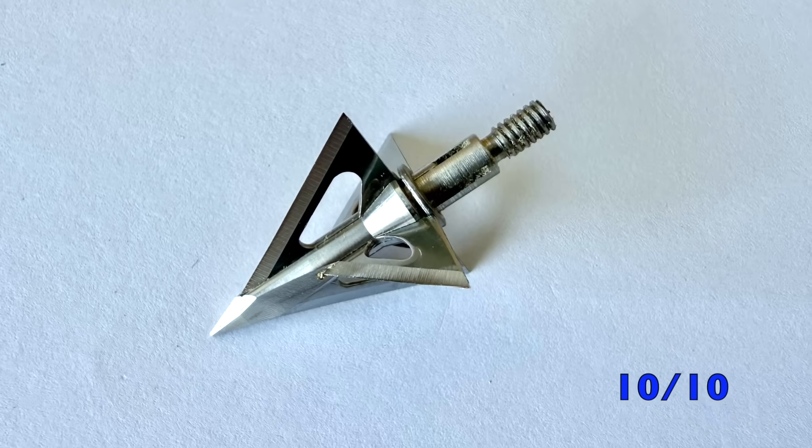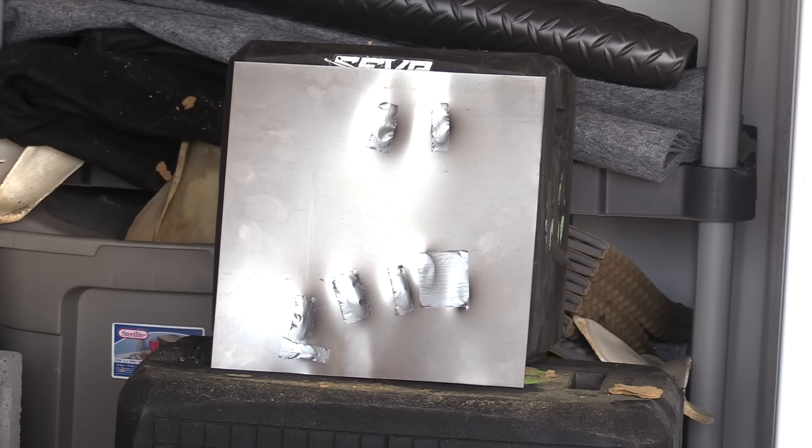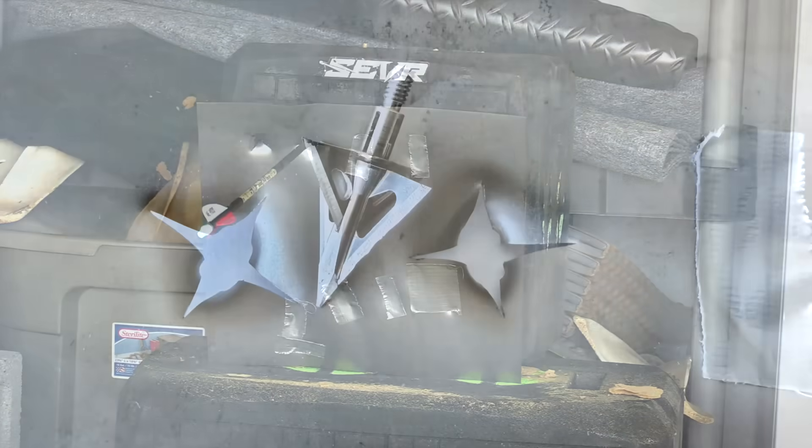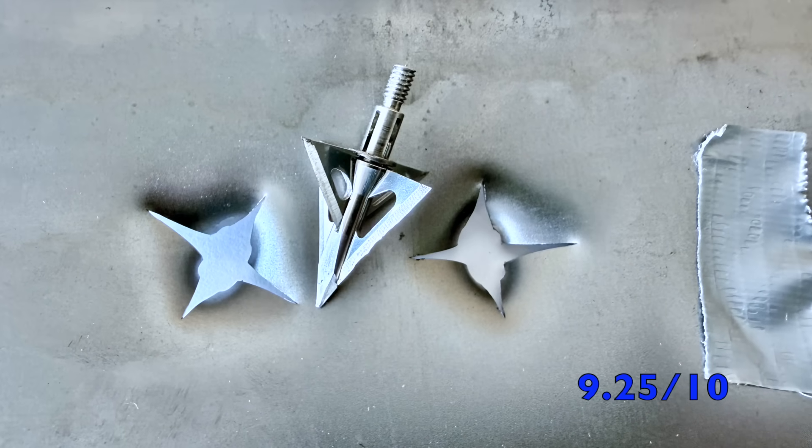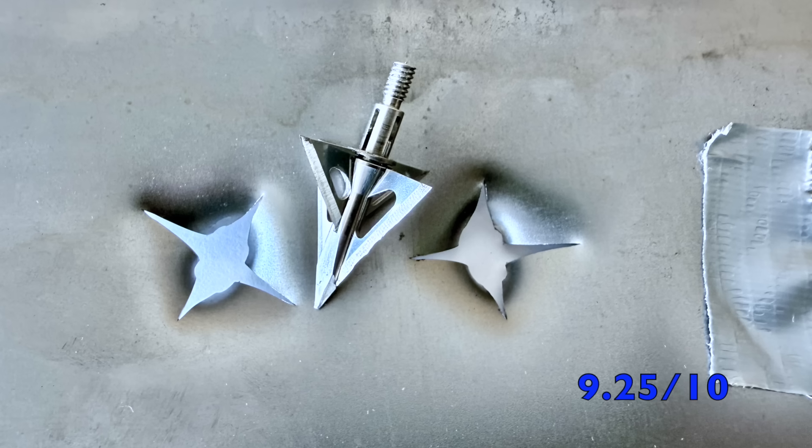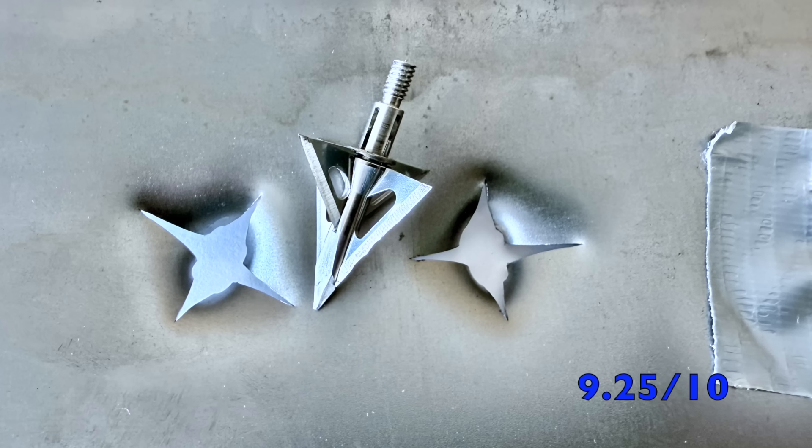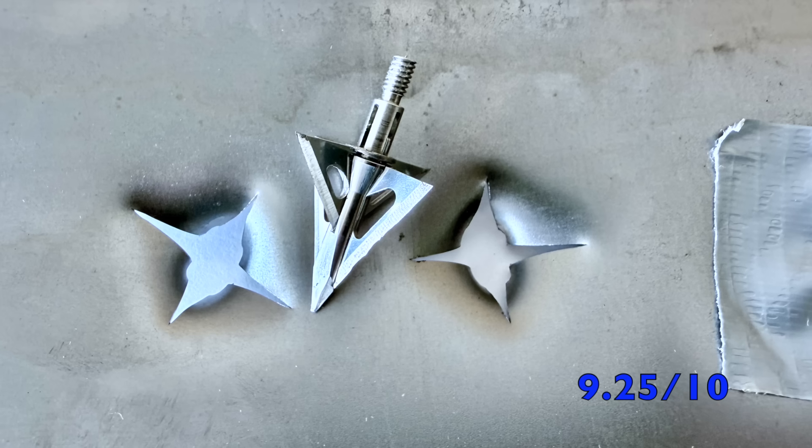The head is in pristine condition after the three shots through the MDF. And here it is after the two shots through the steel plate. The broadhead held together really well. The blade stayed in place. The tip got a little bit of a blunting there. And you can see a little bit of edge chatter on the main blades. But it held together very well.